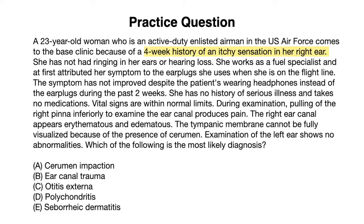The patient presents with a four-week history of an itchy sensation in her right ear. Pulling of the right pinna inferiorly produces pain — this is a very classic finding with otitis externa, because movement of the canal can cause irritation and pain. Looking at the right ear canal itself, it appears erythematous and edematous. So in this history, we're getting symptoms and findings of irritation and inflammation of the outer ear — this is otitis externa.